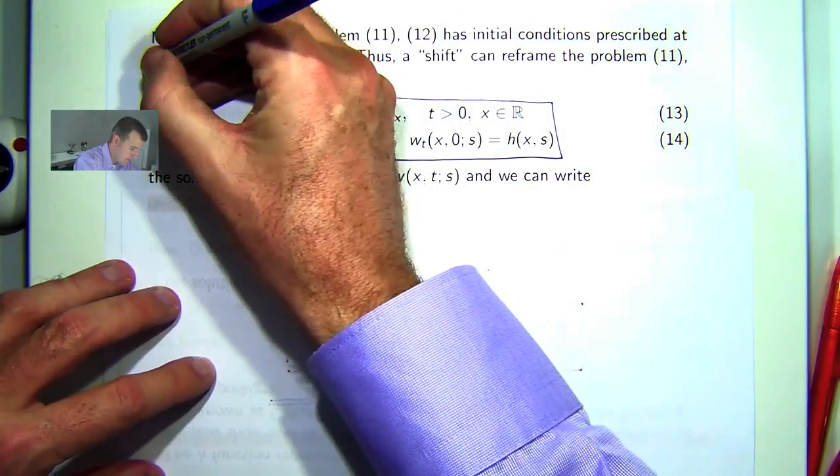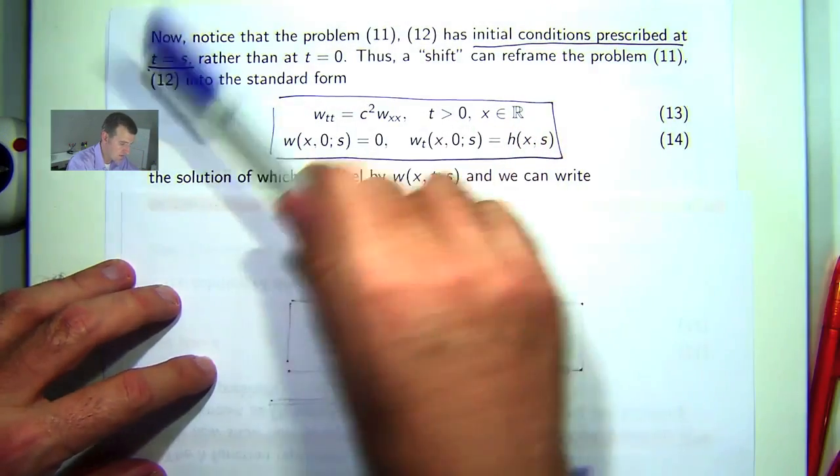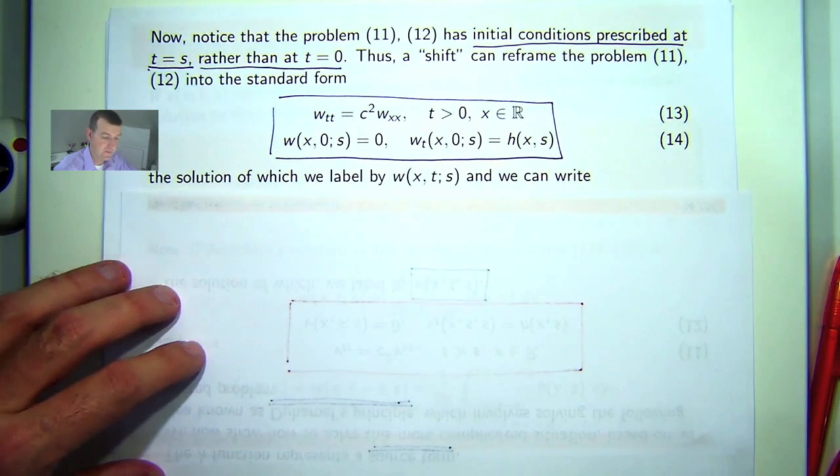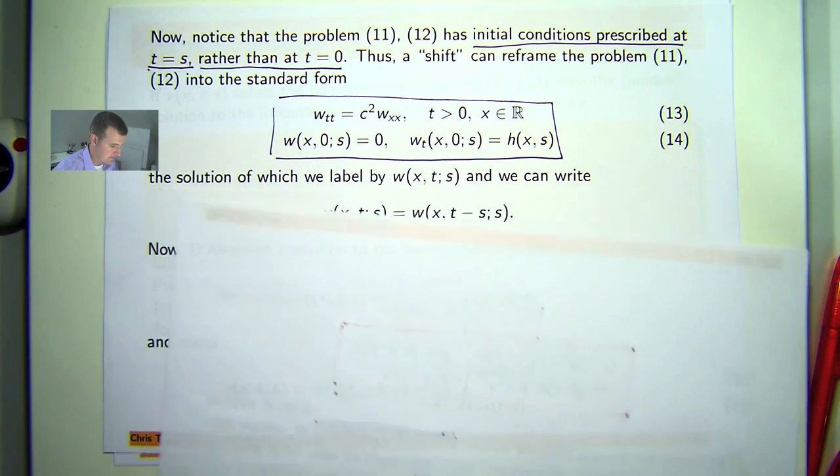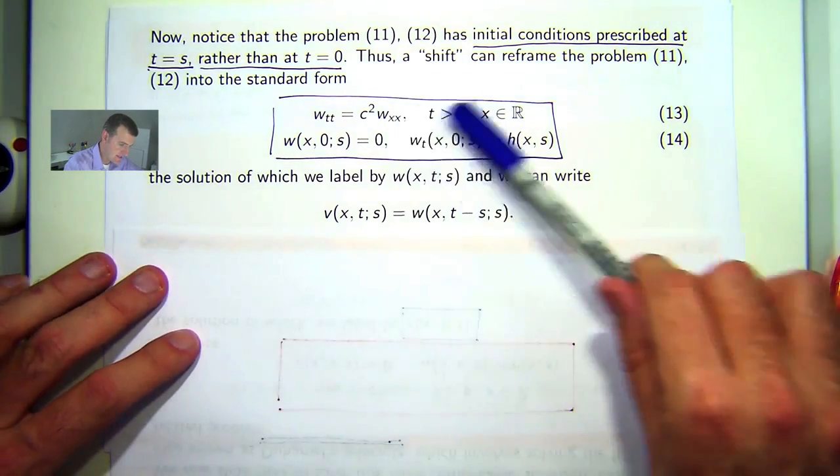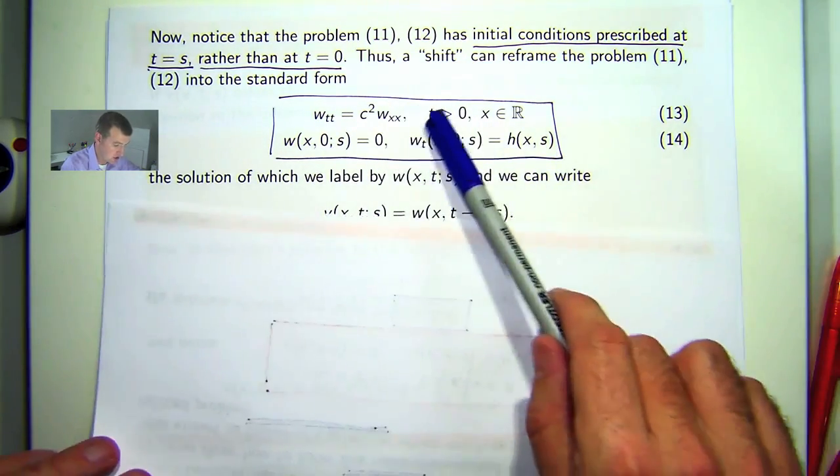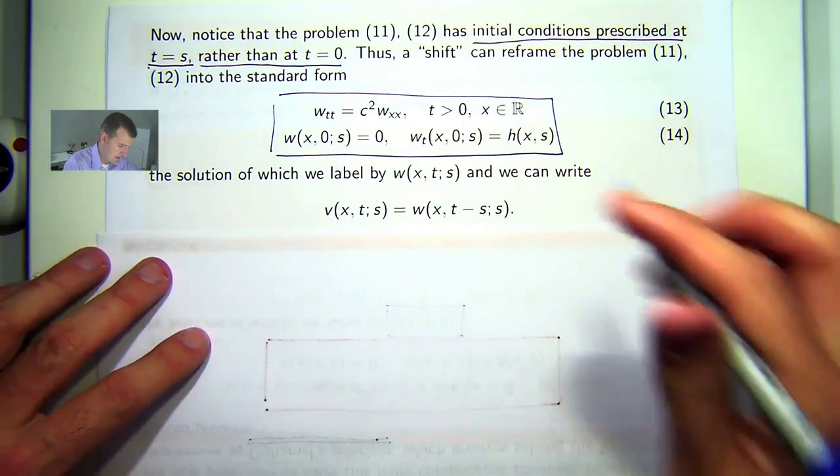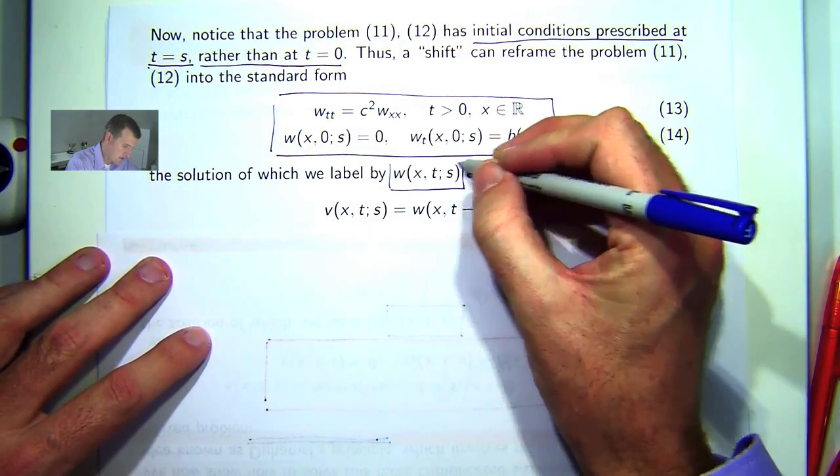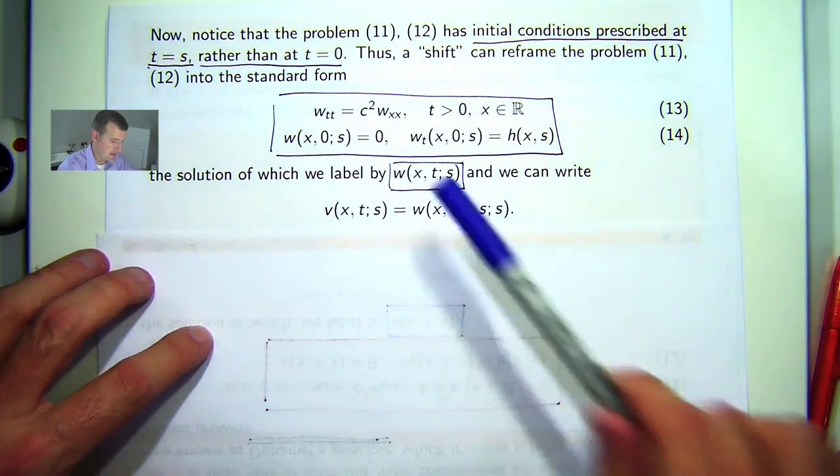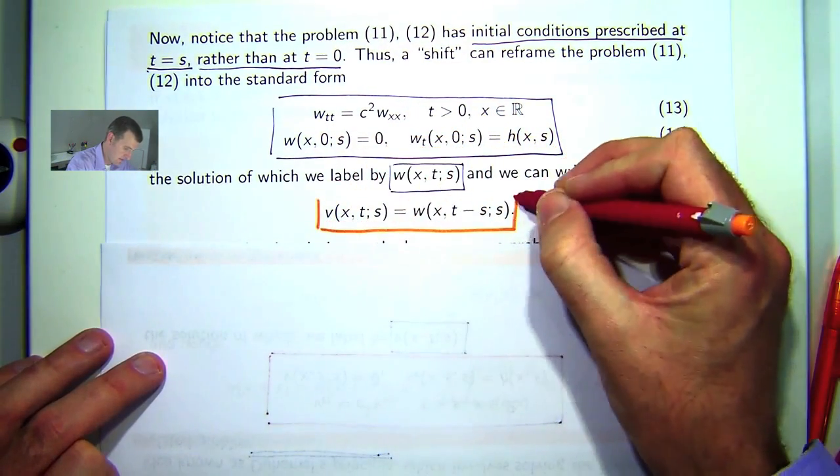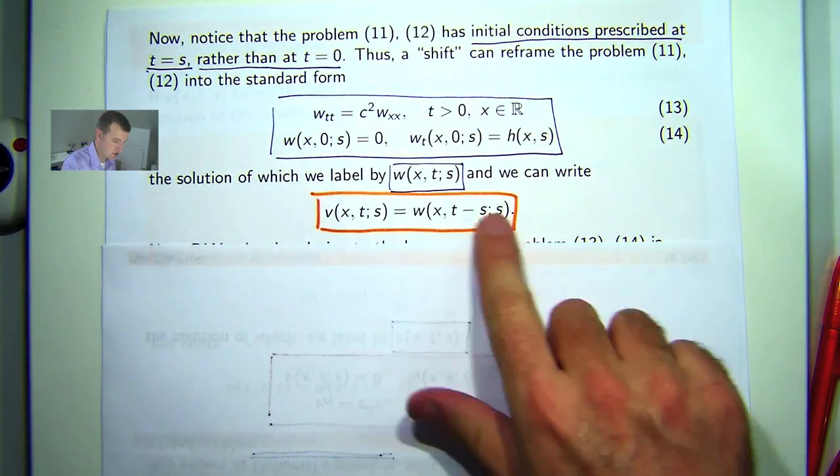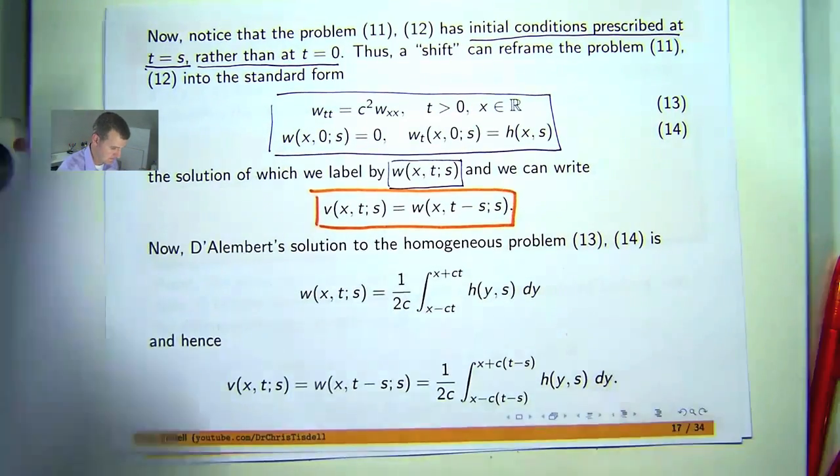All right. So the previous problem has initial conditions prescribed at T equals S rather than at T equals zero. So what we're going to do, we're going to shift the problem so that we get back to the standard wave equation type format. So here's our standard form and you can see we've basically just shifted everything. And the solution to this shifted problem is going to be denoted by W. And what's the relationship between W and V? Well, here it is here. You can see the shift occurring in the second variable.